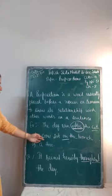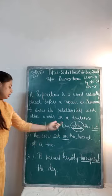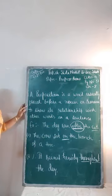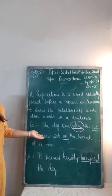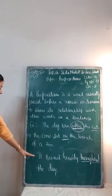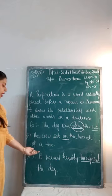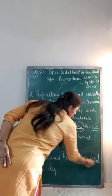Another example: 'The crow sat on the branch of a tree.' Here, 'on' is a preposition. Next example: 'It rained heavily throughout the day' — pura din bahut tez baarish hui. Throughout is a preposition here. So in all these sentences, the words after, on, throughout are all showing the relationship of a noun or pronoun with other words in a sentence.